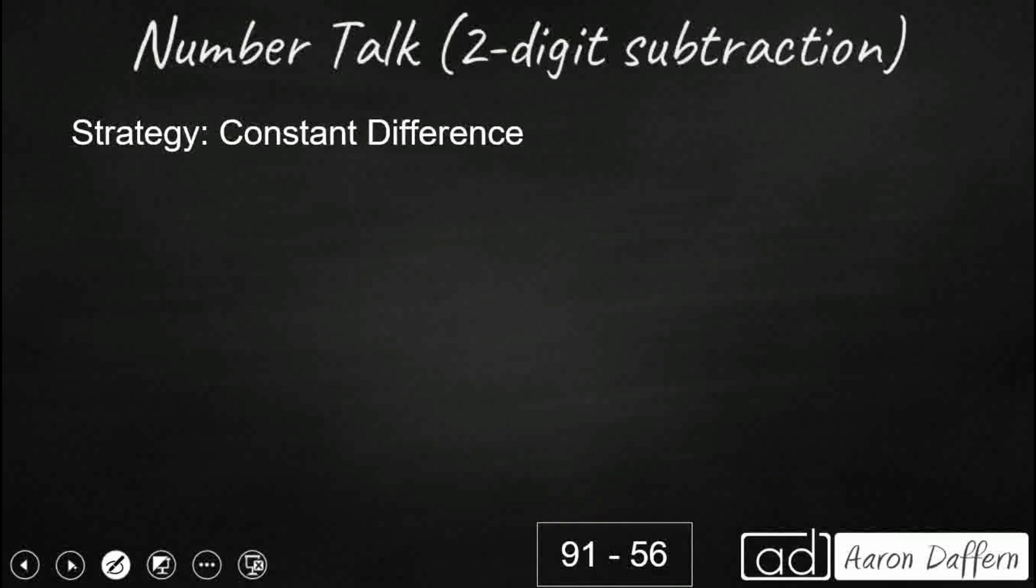Now, constant difference is kind of like what we did with compensation. But there's a slight change. So remember, we added 4 to our subtrahend to make that a little bit easier, right? So we made that a 60. But we can also add 4 to our minuend. So we can change both of those. And since I added 4 to both, it's a balanced expression. It's the same distance apart. So I've got a new problem. 95 minus 60. But that's the same difference apart as 91 minus 56 because I added 4 to both terms. And look how easy that is. No regrouping required. 35.